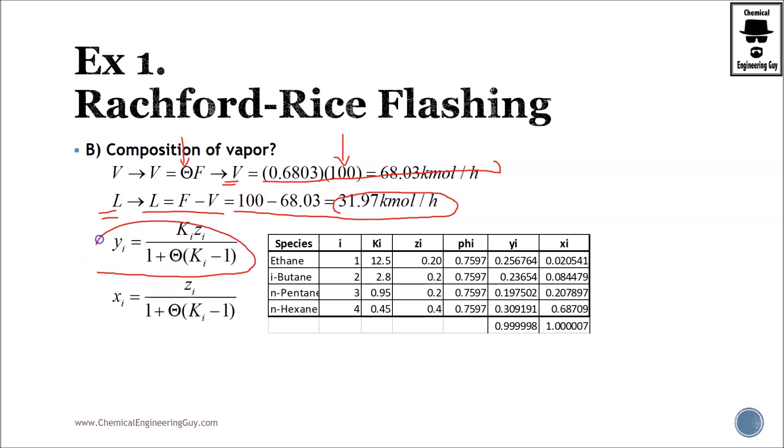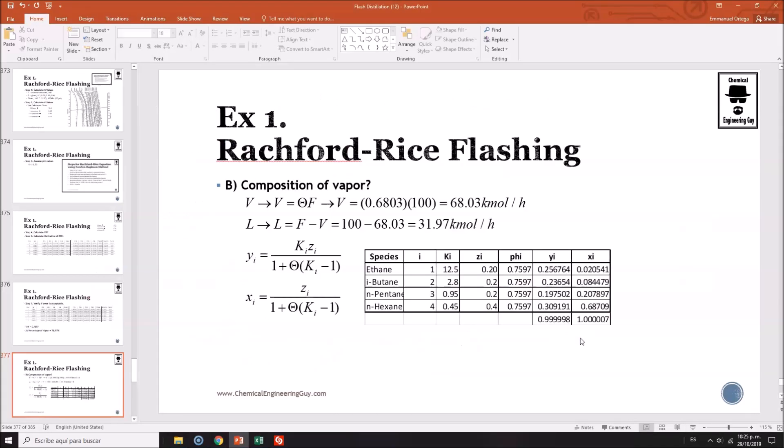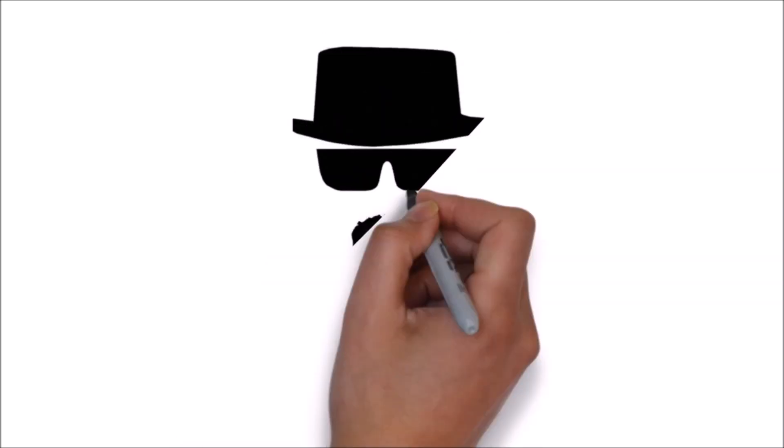And then these values, which I, of course, use Excel, simply calculate K values, added Z values, phi value, which is the correct one. It must be used for everyone. And I got these additions, 0.999, 1.000. And this way is how we calculated Rachford-Rice equation with K values obtained from the DePriester chart.